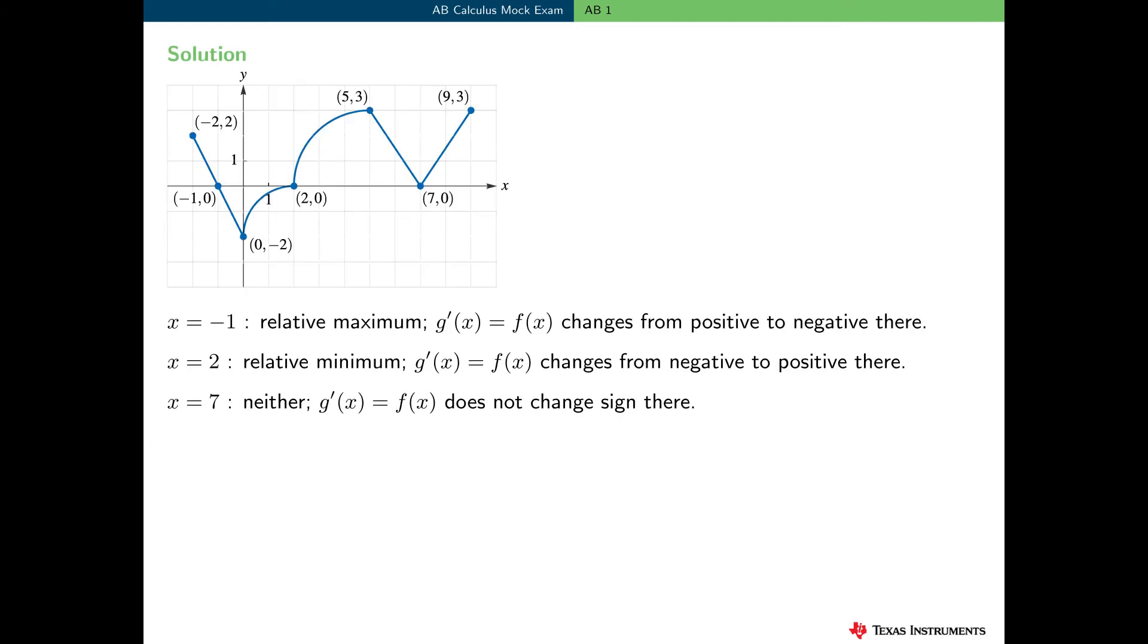To solve this problem, let's go back to the graph of g prime equal to f. We can see from the graph that g prime equal f changes from positive to negative at x equal minus 1. Therefore, g has a relative maximum there. Similarly, at x equal 2, g prime, which is f, changes from negative to positive. So, g has a relative minimum there. And at x equal 7, g prime equal f does not change sign. So, g has neither a relative max nor a relative min there.